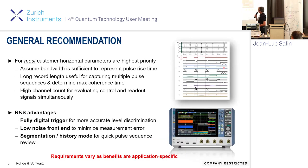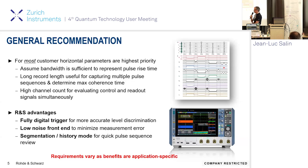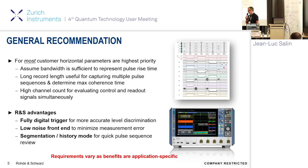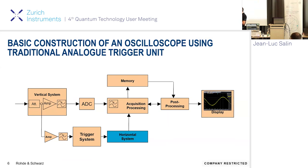The main advantages of Rohde & Schwarz oscilloscopes are: a digital trigger, a very low noise front-end because Rohde & Schwarz designs the amplifiers and ADC in-house with the goal of lowest noise on the market, and oscilloscopes with very long memories so you can store and save long sequences of pulses. I want to focus on one key point: the difference between an oscilloscope with a digital trigger versus an analog trigger.